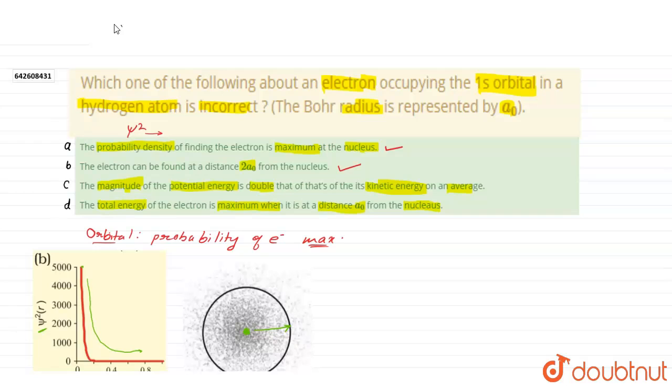And the magnitude of the potential energy is double than that of its kinetic energy on an average. It means, it is also correct, and we can check this by first assumptions of Bohr, first assumptions of Bohr atomic model.